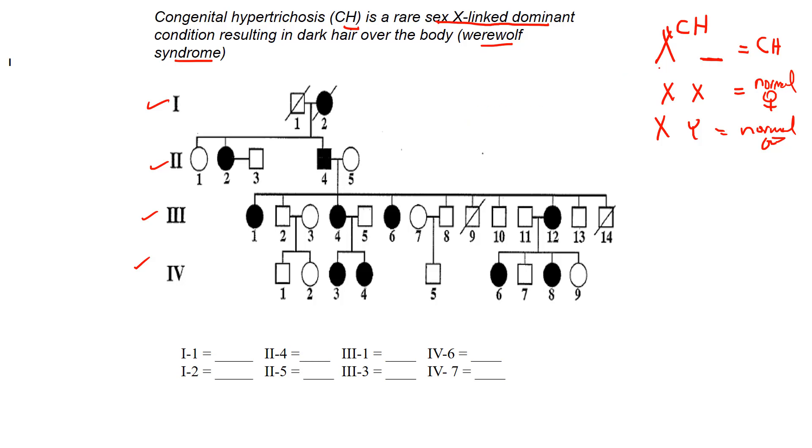So in this case, it's actually a disadvantage having two X's. Because if only one of them has the mutation CH attached to it, she has the disorder. Okay? So it's a whammy, double whammy, if you have two X's.